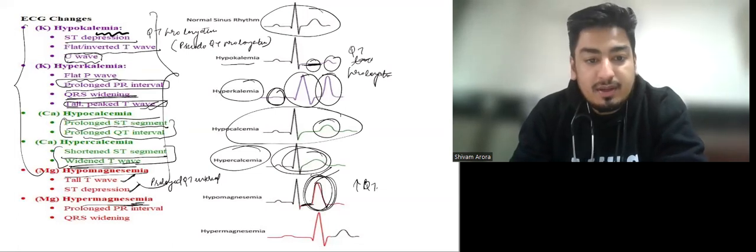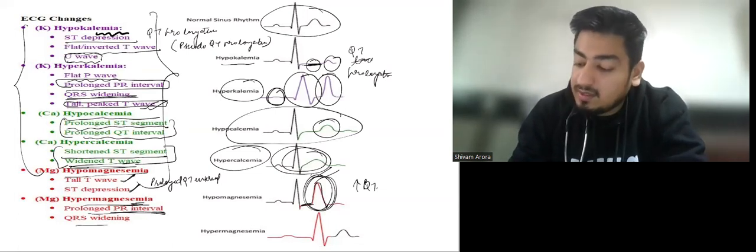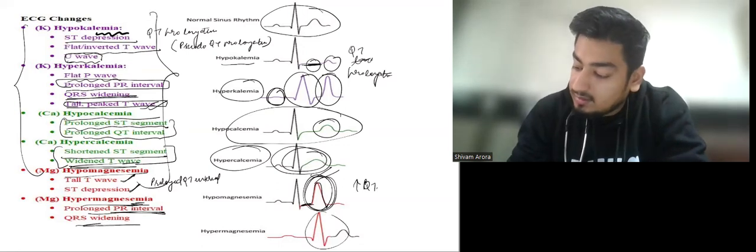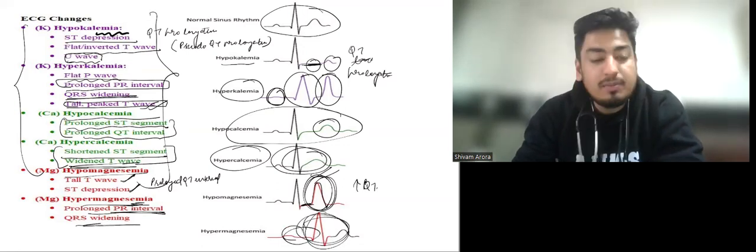In hypermagnesemia we have prolonged PR interval and QRS widening. Like this, we have QRS widening and prolonged PR interval.